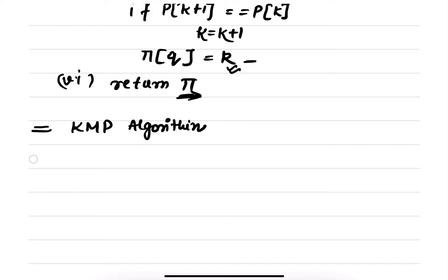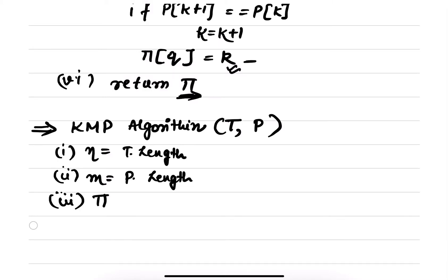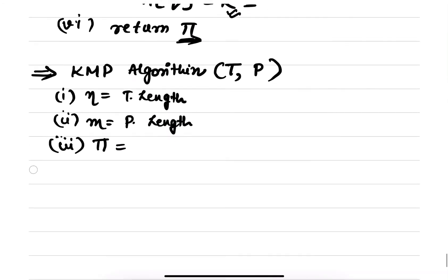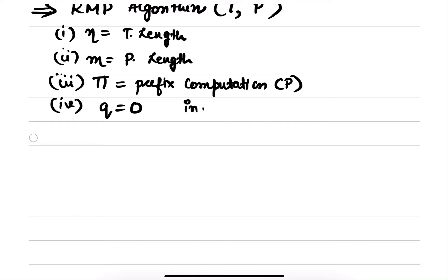Now for the KMP algorithm main function: text will be input and pattern will also be input. First, n equals the text length. Then initialize the pattern length m. The prefix table is computed by calling prefix computation on p. Then initialize q to 0 — the index of the pattern — which is initialized to 0.